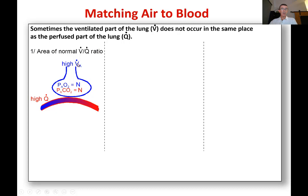You've got high ventilation and high perfusion. So when that happens, the alveolar oxygen pressure and the alveolar CO2 pressure in that region are normal. Everything's fine. You've got good ventilation and good blood gases leaving in that blood going out to the arterial system.